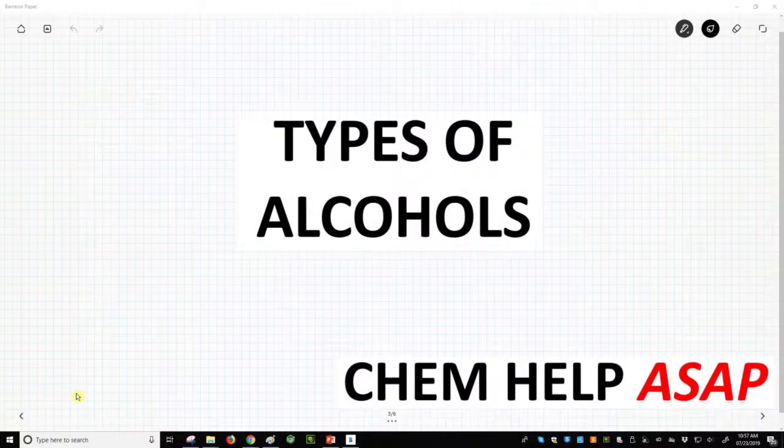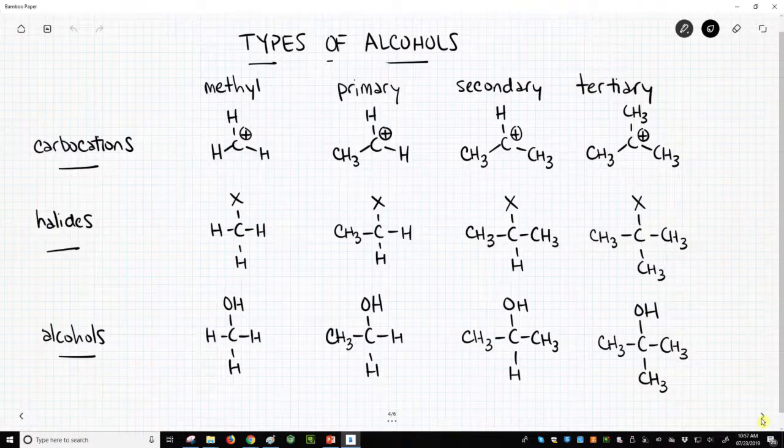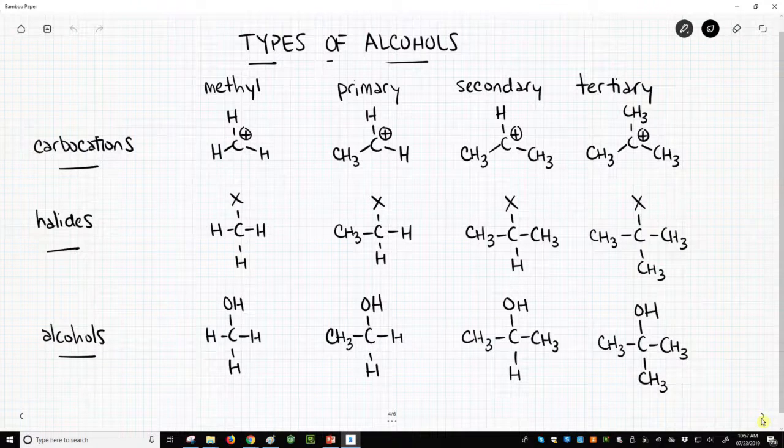Welcome to Chem Help ASAP. We're going to talk about the different types of alcohols that we encounter in organic chemistry. And this ties directly into the types of carbocations and the types of halides that we have. So that's why we have so much stuff on this screen.